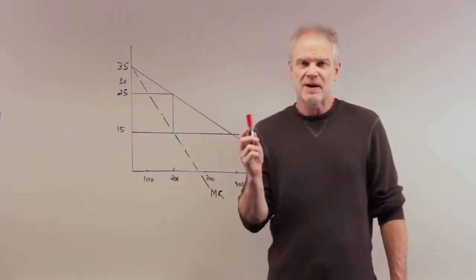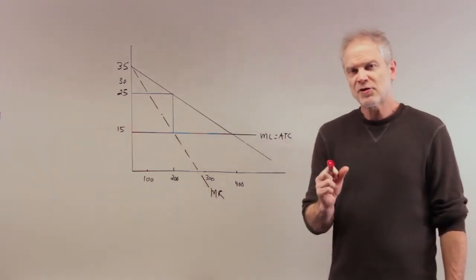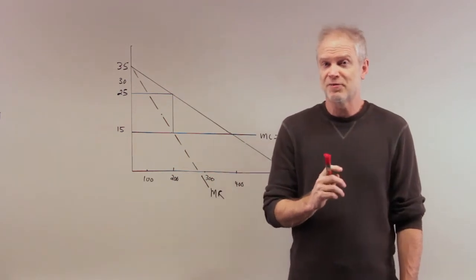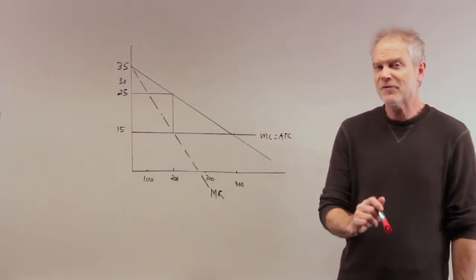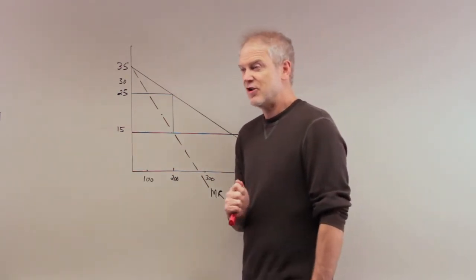So this example is about price discrimination. And the moral of the story is that with price discrimination, you're going to make more money if you can price discriminate. And if you can perfectly price discriminate, you can make the most.